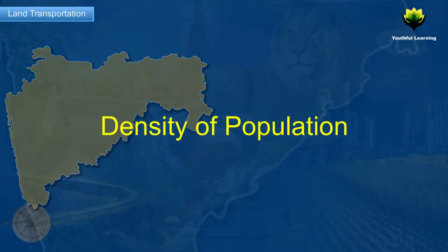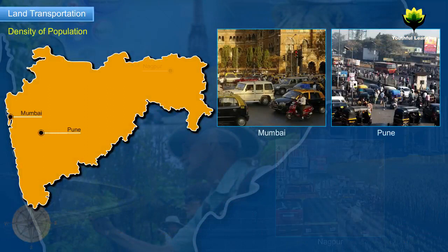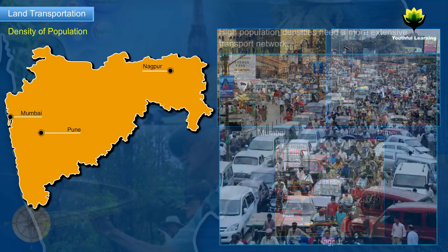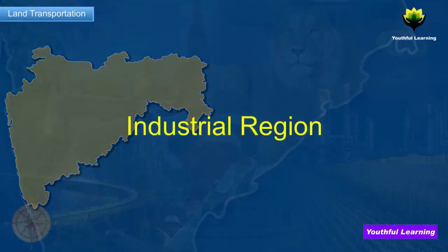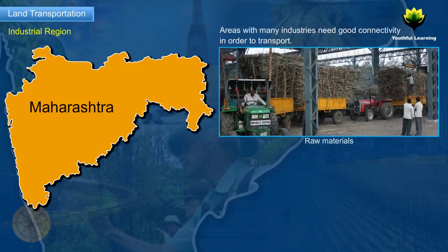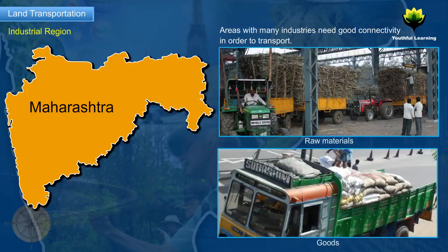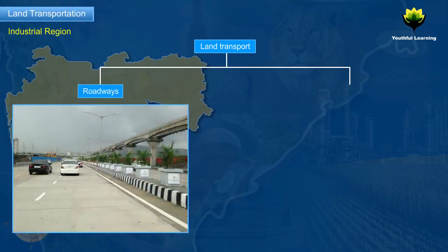Density of Population: Areas like Mumbai, Pune, Nagpur, etc., which have high population densities, need a more extensive transport network. Industrial Region: Areas with many industries need good connectivity in order to transport raw materials and goods from one place to another. Land transport is of two types, namely roadways and railways.